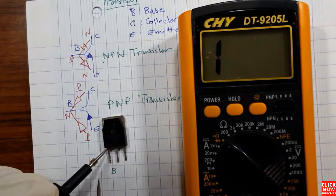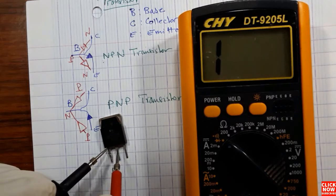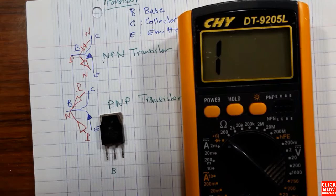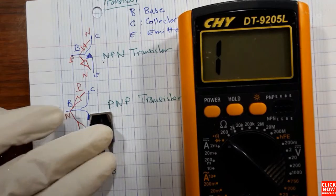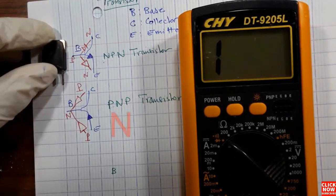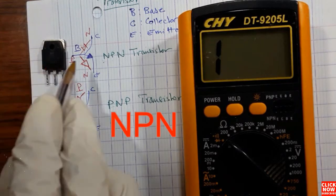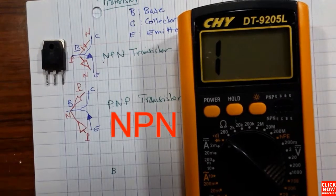Of course, if we switch the probes — meaning we put the black probe in the base and the red probe once in the collector and once in the emitter — we will not get anything on the multimeter. So this transistor is an NPN transistor.